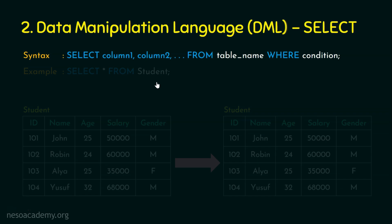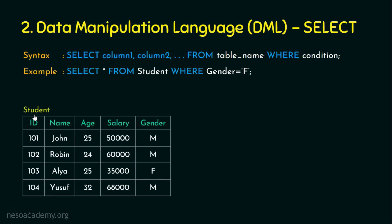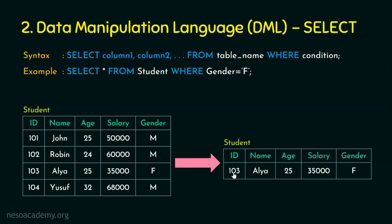In the next example, we are selecting all columns using star from the student table where gender = 'f', meaning we are listing all female candidates. Suppose the student table contains id, name, age, salary and gender, and only one record has 'f' against gender. When we execute this query, we get all columns — id, name, age, salary and gender — but only for one row: 103, Alia, 25, 35000, f.